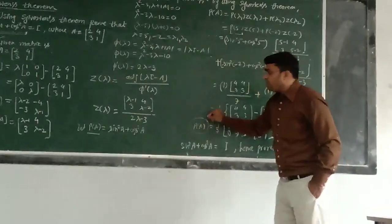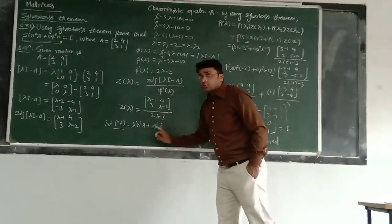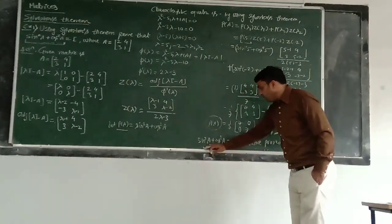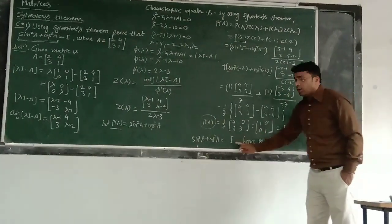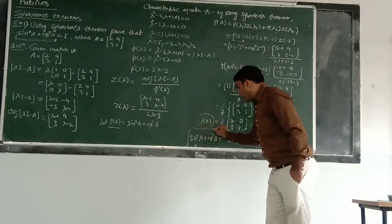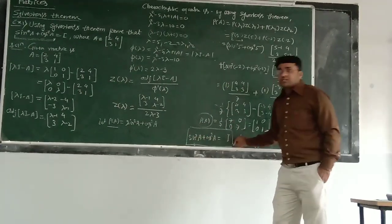And this is nothing but our I, identity matrix. So, P of A, we have defined as sin square A plus cos square A, and which we have proved as equals to I. So, this is standard identity.